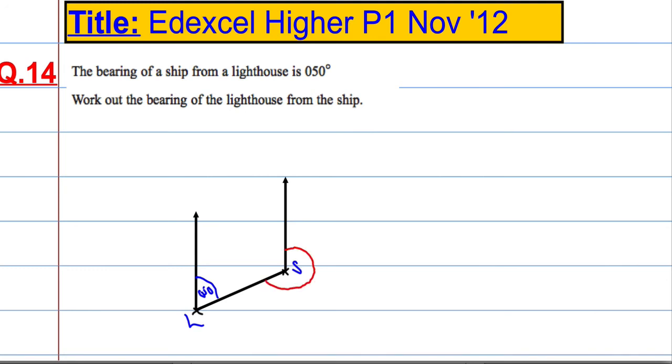Always measure from north in a clockwise direction and always give three figures. So now there's lots of different ways of doing this. If that's 50 degrees, because these two lines are parallel, then the two angles inside, this angle here and this angle in green, must add to 180 because they're interior angles, or supplementary angles I think they're called sometimes. So this must be 130 degrees.